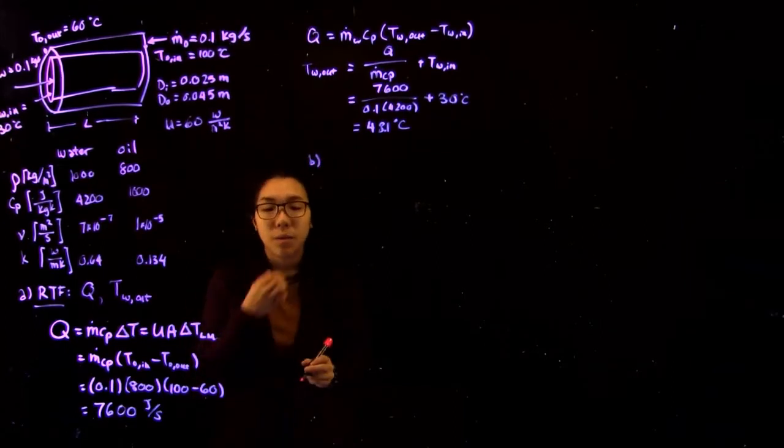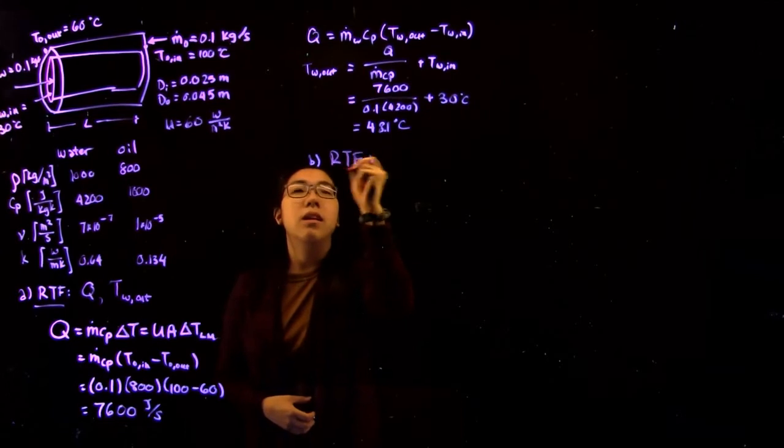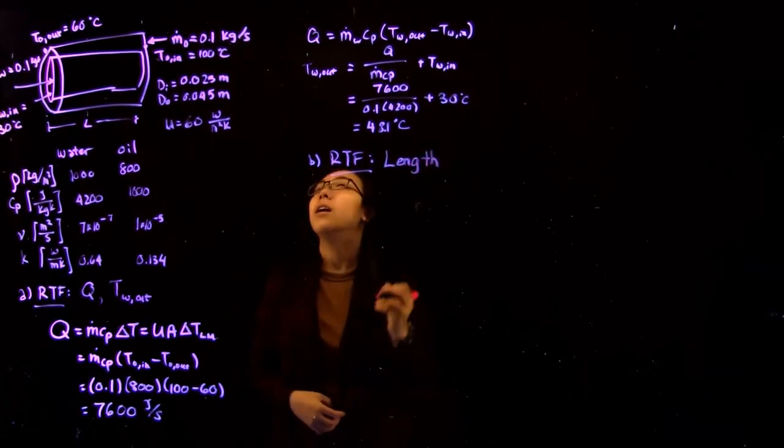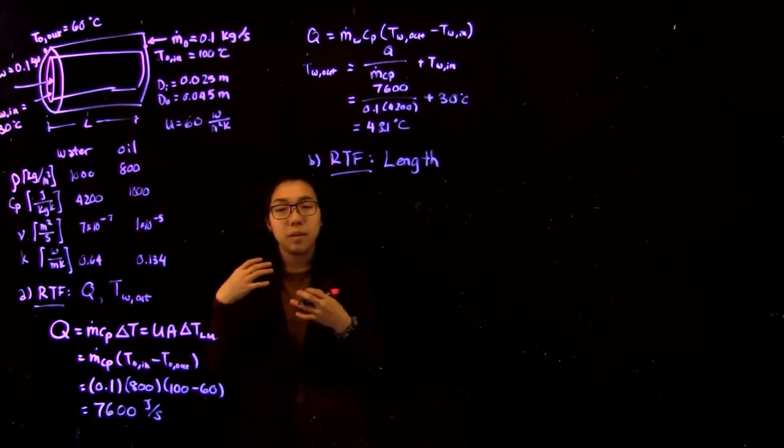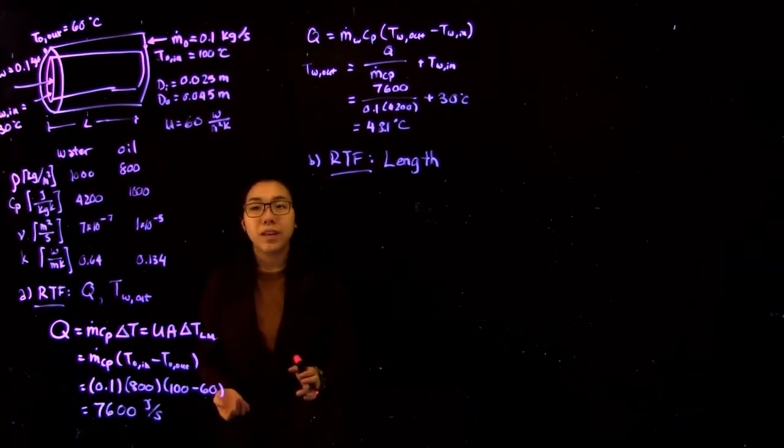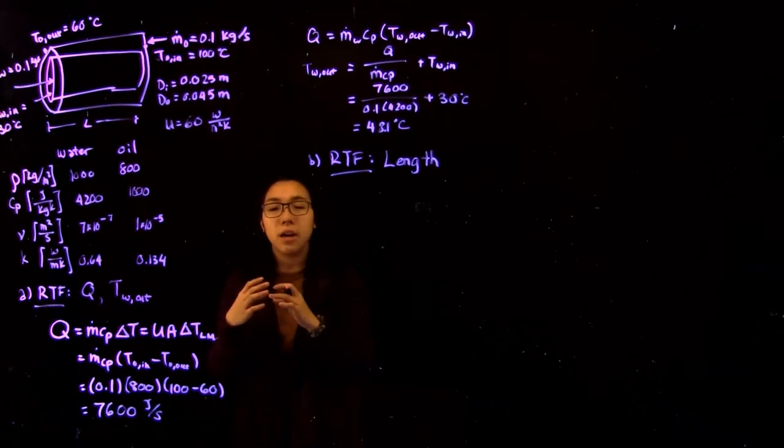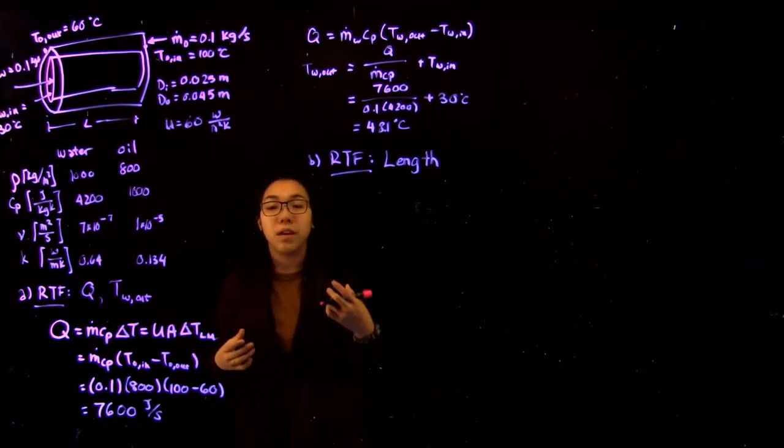So the next part of this question, the next thing we want to calculate, is the length that is required of this heat exchanger. Essentially how much heat that's transferred has to do with the surface area of the two fluids that are in contact. The surface area is just defined as the diameter of the inner shell of this heat exchanger times the total length, because that gives us the surface area of a cylinder.